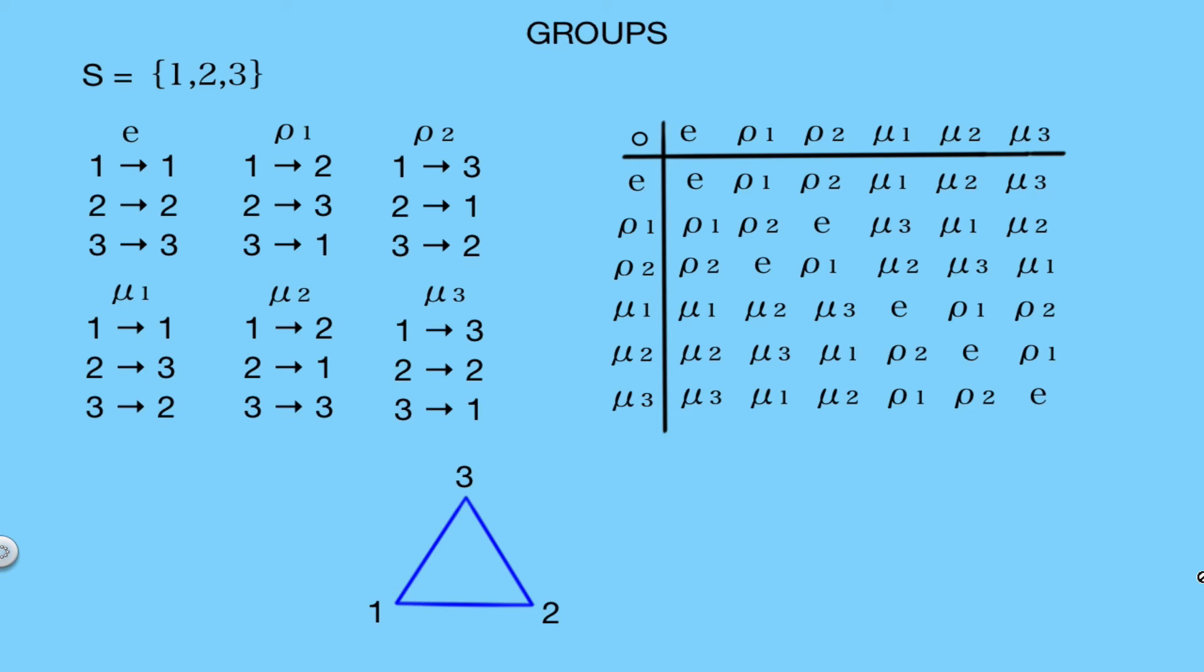To look at one example, one of the permutations sends 1 to 2, 2 to 3, and 3 to 1. This would be represented by rotating our triangle once counterclockwise.